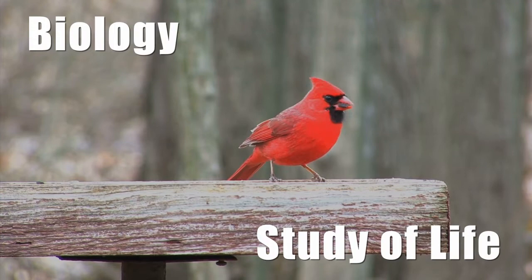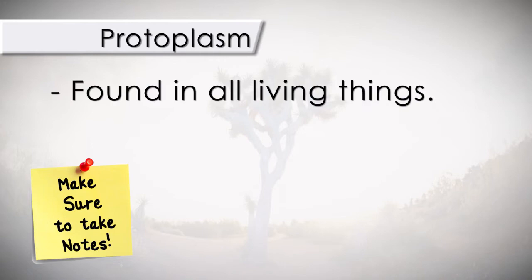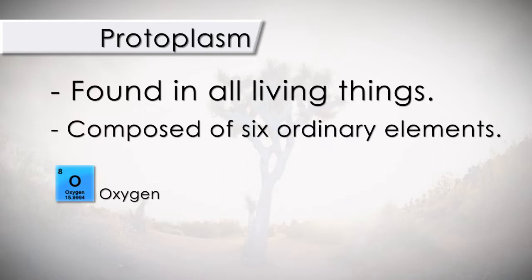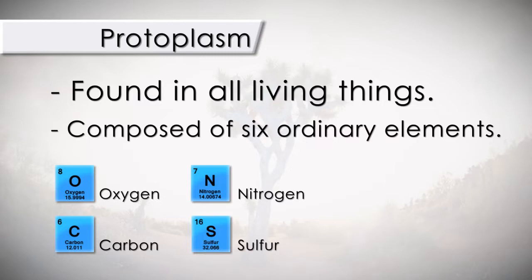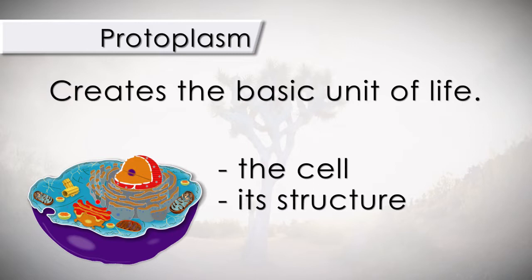The basic substance of all life is protoplasm. Protoplasm is found in all living things; it is composed of six ordinary elements: oxygen, carbon, nitrogen, sulfur, hydrogen, and phosphorus. It is the protoplasm that creates the basic unit of life, which is the cell — its structure and its six basic essential functions required for life.